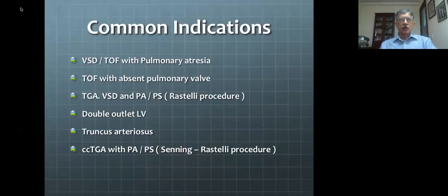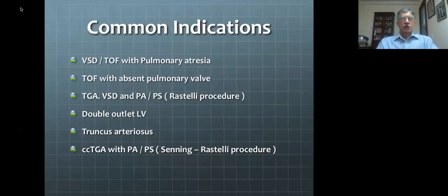The common indications for use of conduits include patients with pulmonary atresia, generally those with a ventricular septal defect or tetralogy of Fallot physiology; patients with tetralogy of Fallot with absent pulmonary valve where a competent valve is desired; and transposition with VSD and either pulmonary stenosis or pulmonary atresia, which is where the Rastelli procedure was originally described. In the latter, although a connection exists between the ventricles and pulmonary artery, it cannot be maintained after complete repair because the left ventricle must be routed to the aorta.